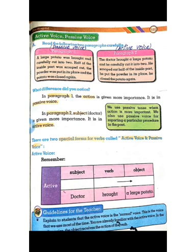Now we have active voice and passive voice. Listen carefully. We will read two paragraphs. Paragraph one: 'A large potato was brought and carefully cut into two. Half of the inside part was scooped out. The powder was put in its place and the potato was closed again.' Paragraph two: 'The doctor brought a large potato and carefully cut it into two. He scooped out half of the inside part. He put the powder in its place. He closed the potato again.' What difference did you notice?